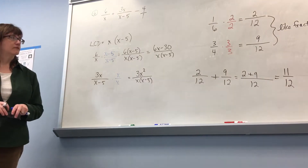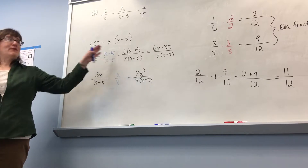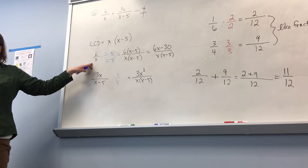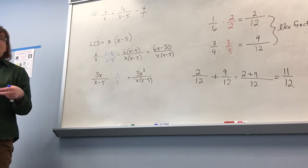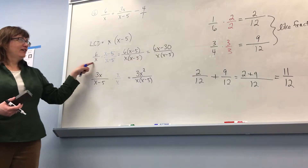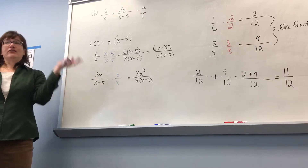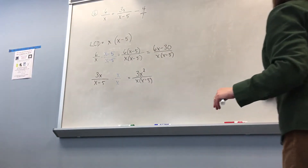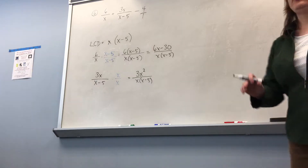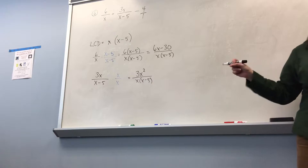A student asks: couldn't I cancel out the x minus 5 right here? Well, I could, but that would put me back to where I started. What I'm trying to do in this step is write everything with the least common denominator. So if I canceled out the x minus 5, I wouldn't have the denominator x times x minus 5 anymore — I would undo all the work I just did. Try to resist canceling until you get to the end.